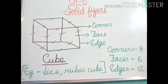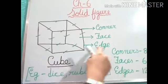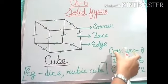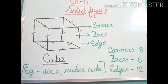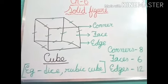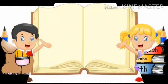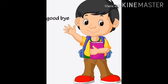So like this, you will draw all the shapes, label the figure, write the shape name, and write how many corners, faces, and edges are there. Okay. Now, homework. Draw the solid figures and do the same in your maths copy. So that's all for today's class. Take care. Bye-bye.